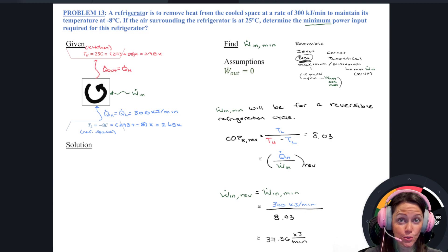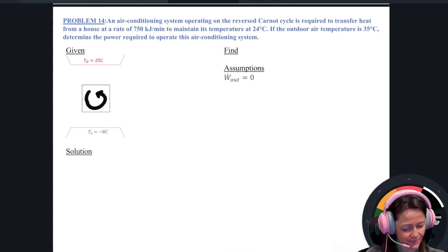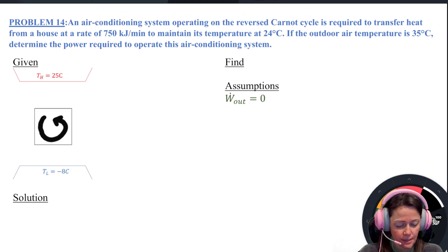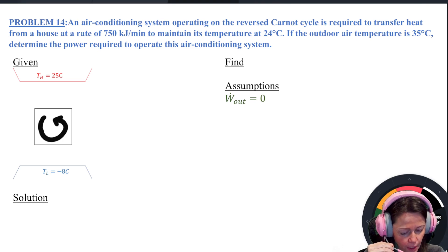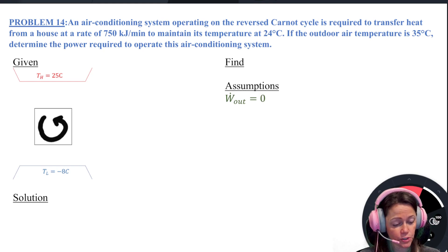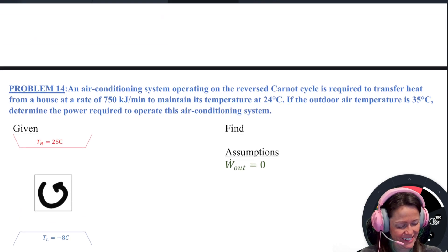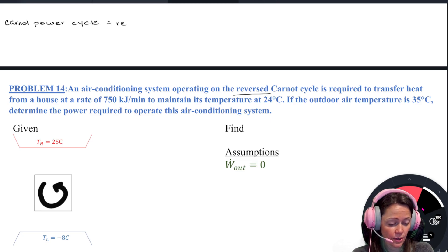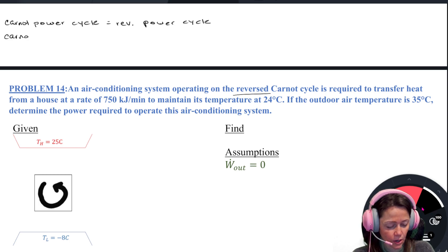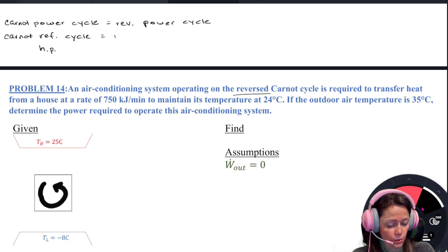So we have an air conditioning system operating on the reversed Carnot cycle. A Carnot power cycle is a reversible power cycle. A Carnot refrigeration or heat pump cycle can also be referred to as a reversed Carnot cycle. A reversed Carnot cycle is the same thing as a Carnot refrigeration or heat pump cycle.